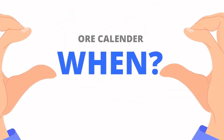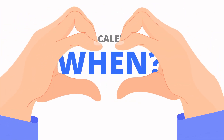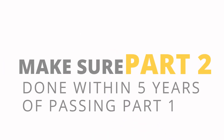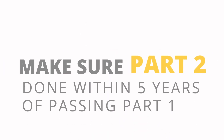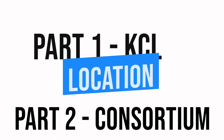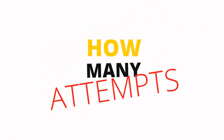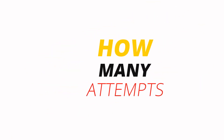How soon do I have to do the exams? Once you've passed part one, it is important that the ORE part two is done within five years of sitting part one. Where do I do the exam? Part one is run by King's College London, and part two is run by a consortium group, with the four components held at separate venues in London.